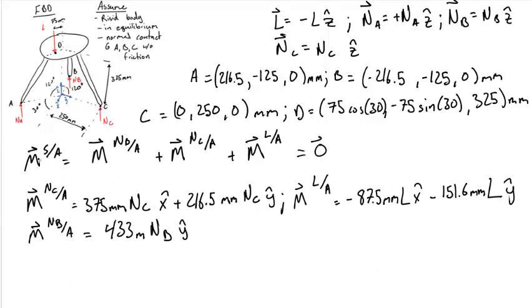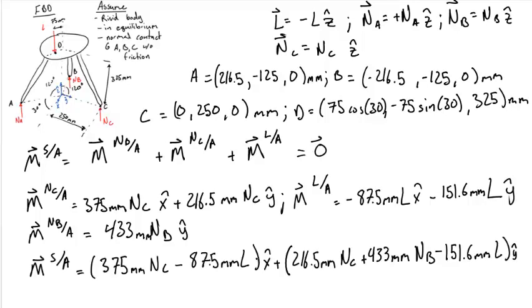With the individual moment vectors calculated, we can now find the vector sum of the moments in the system about point A. Adding up their vector components, we now have the moments of the system about A. Since this is an equilibrium, we know that this must equal the zero vector.